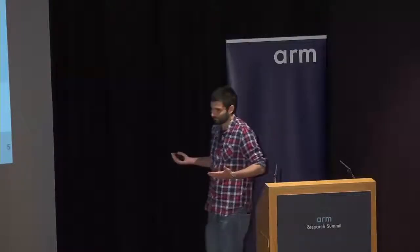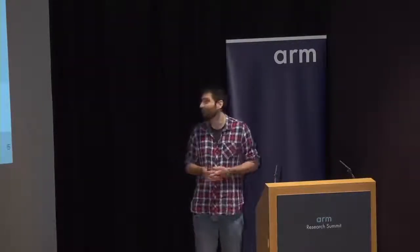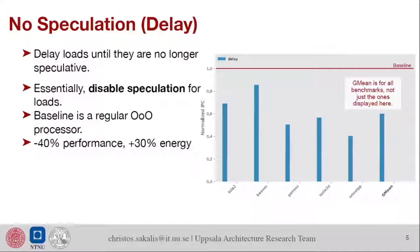First things first, we have the baseline which is the red line, a normal out of order core. First question is what happens if we don't do speculative execution at all? What if we just take the loads, delay them until they're no longer speculative, until we're sure they're executed and they will have side effects? Then we should be safe.